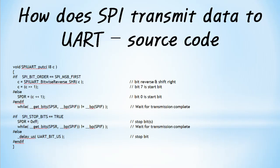The reason for the shift write or shift left is to add a start bit. If SPI_stop_bits equals true in the source code, 8 bits of stop bits are output. If SPI_stop_bits equals false, a delay of 1 bit is added to keep the MOSI pin idle high. If you use 2 stop bits, you can change it to _delay_us(UART_bit_us) multiplied by 2.